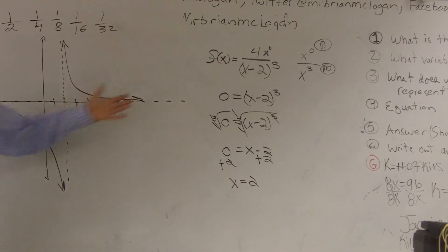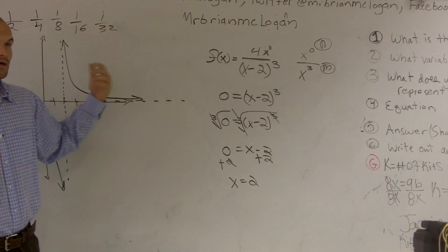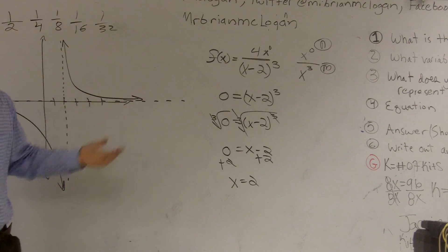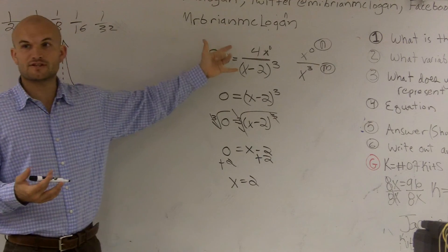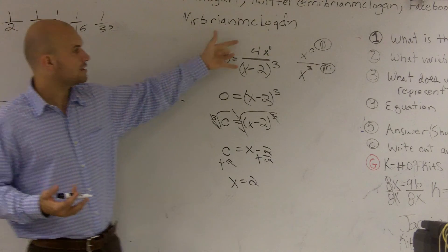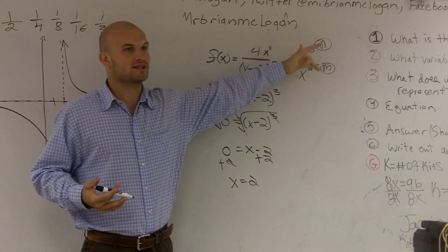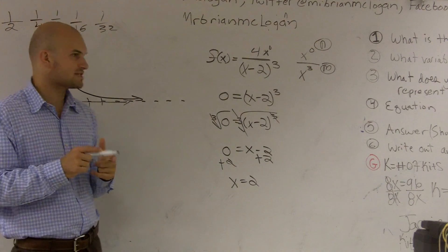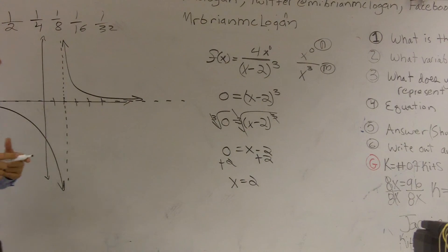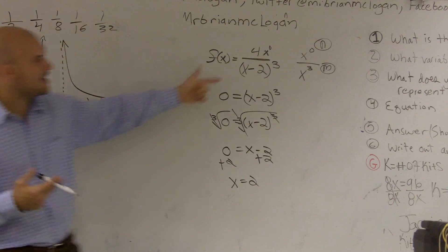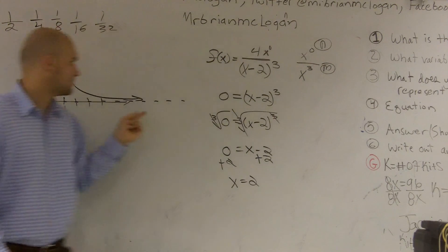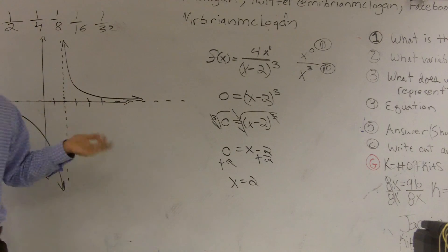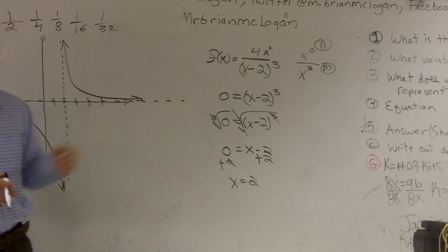To find the vertical asymptote, just remember: you find the zeros of your bottom function. To find the horizontal asymptote, you take your leading degrees, look at what those degrees are, and apply the horizontal asymptote test. When n is less than m, the asymptote equals zero. I'll make a video covering all those cases so you can see them.